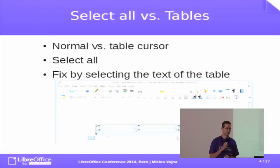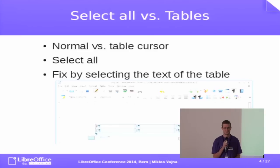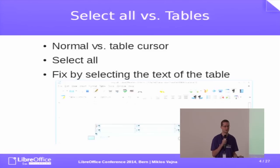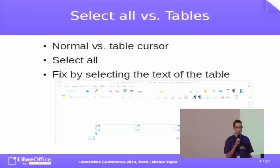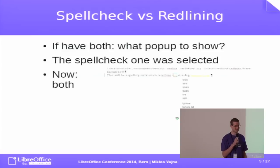In the original bug report, some developers estimated this would take half a year of work to fix or something like that. It turns out that a neat hack is possible: you don't actually need to select the whole table. It's enough if you select the text inside the table, and that will already do what you want. In this particular case, the reporter wanted to mark the whole document text so he can adjust the font or increase the font size — and for that you only need to select the text inside the table.